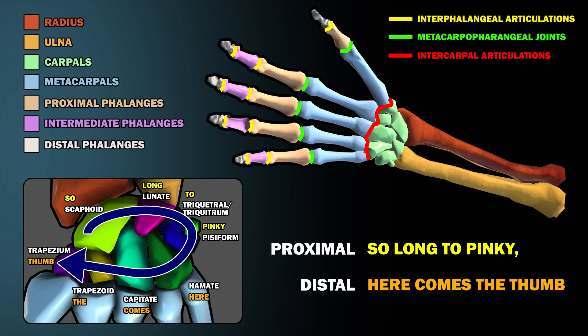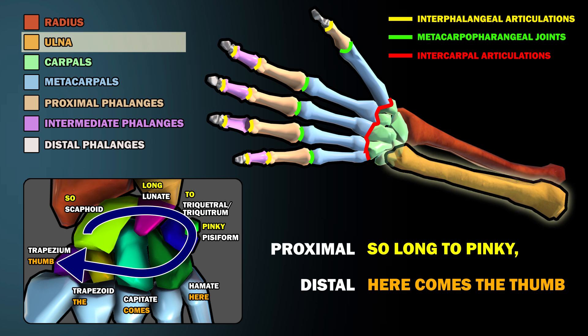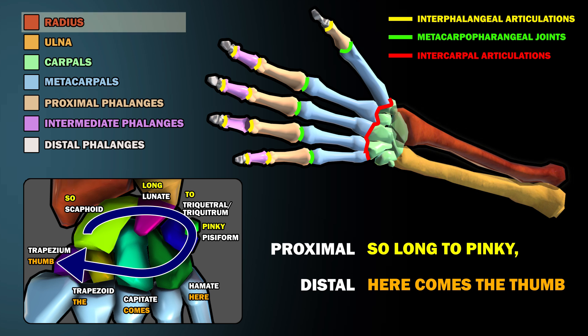Lastly, in addition to the 27 bones of the hand, I'd just like to mention the ulna and the radius, which are the two bones of the forearm.